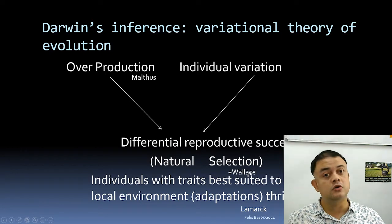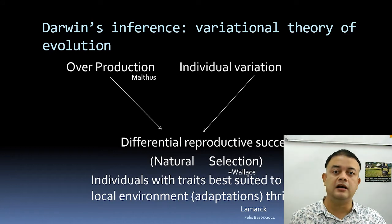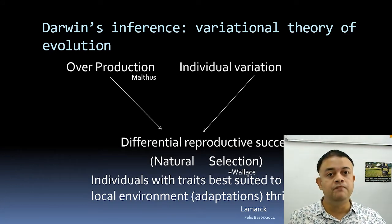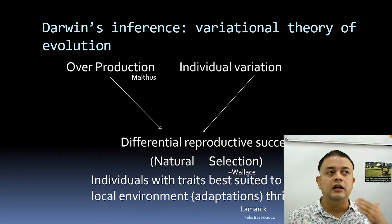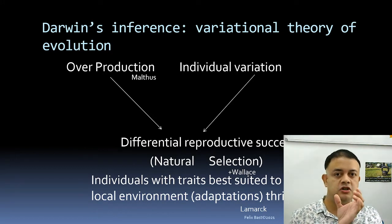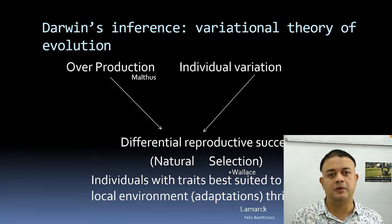The idea of natural selection is not Darwin's alone — Alfred Russel Wallace independently conceived the same idea. Wallace was a biogeographer who spent almost his entire time in the Indo-Malay Archipelago — Indonesia and Malaysia — the group of islands where he did his work.